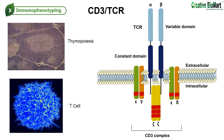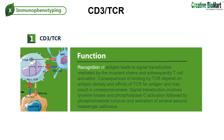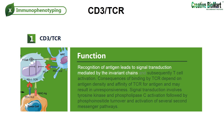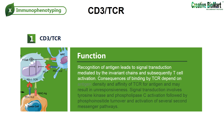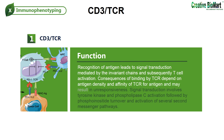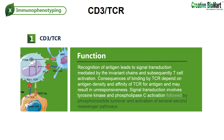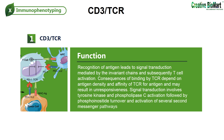The alpha-beta and gamma-delta heterodimers recognize peptide antigen bound to MHC antigens. Recognition of antigen leads to signal transduction mediated by the invariant chains and subsequently T-cell activation. Consequences of binding by TCR depend on antigen density and affinity of TCR for antigen, and may result in unresponsiveness. Signal transduction involves tyrosine kinase and phospholipase C activation, followed by phospholipid turnover and activation of several second-messenger pathways.